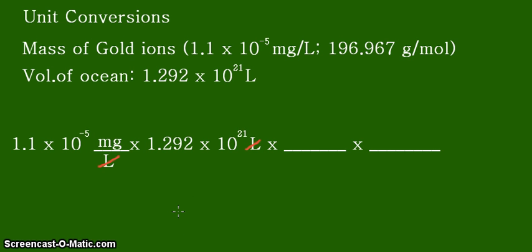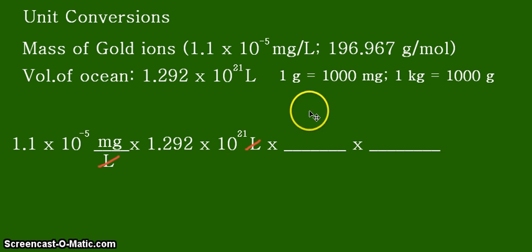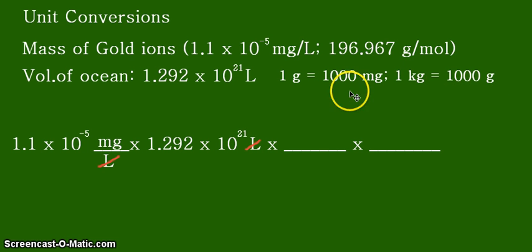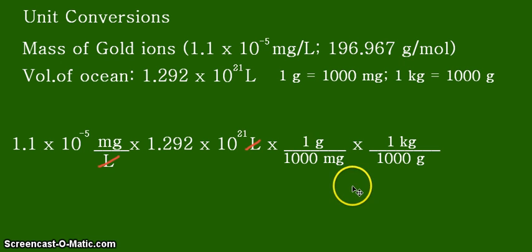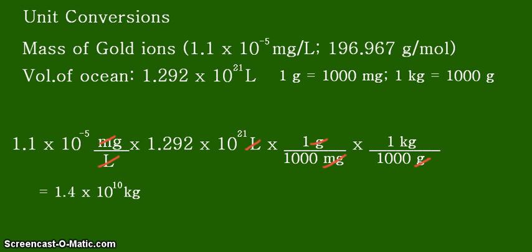We need to convert milligrams into kilograms, which requires two conversion factors. First, one gram equals 1,000 milligrams; second, one kilogram equals 1,000 grams. Writing these as conversion factors with units in the proper positions, the milligrams cancel leaving grams, then grams cancel leaving kilograms — our desired unit.